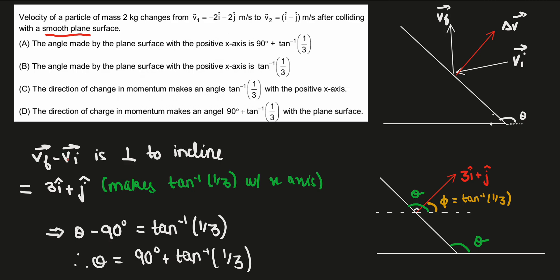There is no change in momentum or velocity parallel to the incline. I can find either the change in momentum vector or directly the change in velocity vector, since mass is just a constant. Calculating vf minus vi gives delta v = 3i cap + j cap. This is also the change in momentum vector direction when multiplied by the mass of 2 kg, and this direction is perpendicular to the incline.